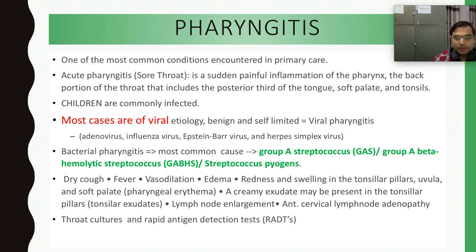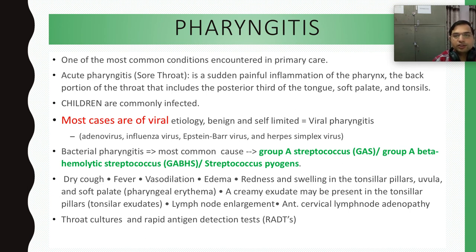Pharyngitis causes can be viral or bacterial. Viral causes include adenovirus, influenza virus, and Epstein-Barr virus — which we studied in mononucleosis or glandular fever — and herpes simplex virus. These viral causes are mostly benign and self-limited; they get corrected on their own.